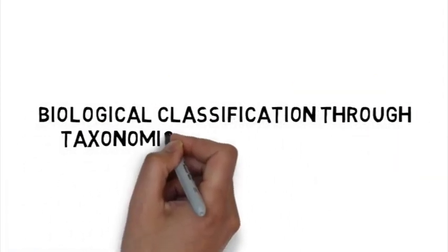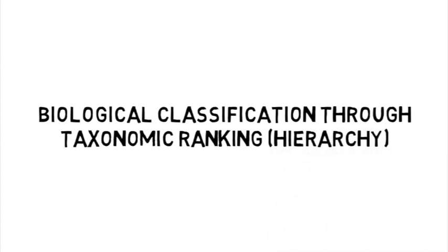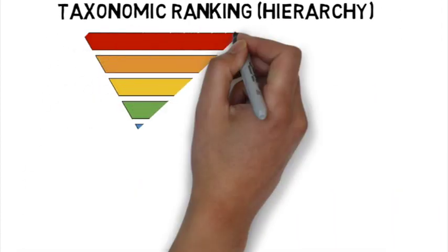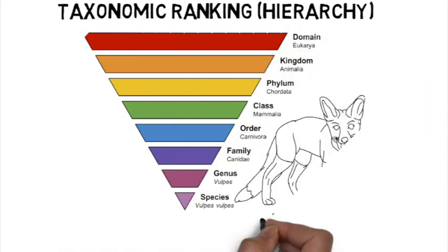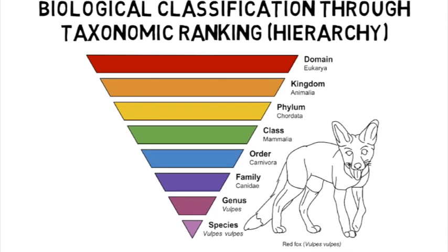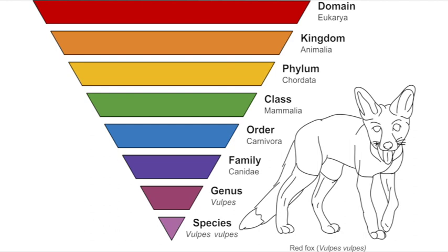Organisms are grouped into these taxons based on very similar characteristics — you have to share very similar characteristics with another organism to be grouped into the same taxon. Once these groups are established they can be ranked, and that's where the term taxonomic rank comes from. This entire system of taxonomic ranking, built into a pyramid, was actually started in the 1700s by a Swedish botanist named Carl Linnaeus.